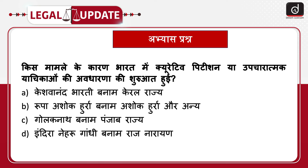Yeh note kar lete hain abhyas prashn: Kis maamle ke kaaran Bharat mein curative petition ya upchaaraatmak yaachikaon ki avdharna ki shuruwaat hui? Keshwanand Bharati banaam Kerala Rajya, Rupa Ashok Hurra banaam Ashok Hurra aur anya, Golaknath banaam Punjab Rajya, ya Indra Nehru Gandhi banaam Raj Narayan. Iska uttar hume comment section mein zarur bhejiyega. Aisi hi aur videos dekhne ke liye like, share aur subscribe karna na bhulaayein.